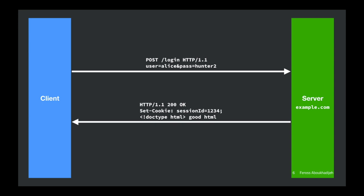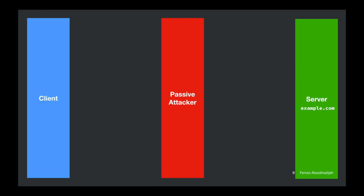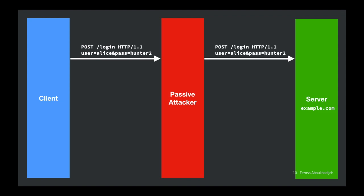What can happen is a passive attacker — anyone who controls a router or ISP you're using — can observe the traffic. The passive attacker lets the request go along without modifying it, but they observe it. They see your username and password in the request, and when the server's response passes back through them, they also observe your session cookie.